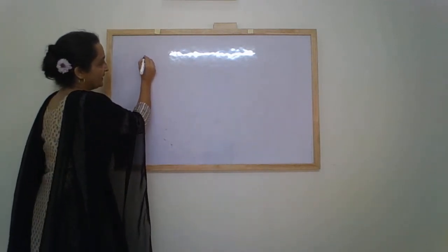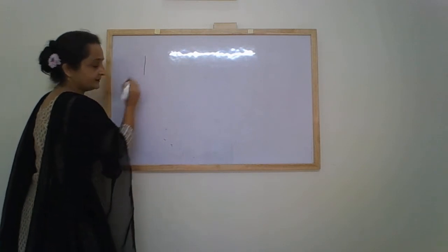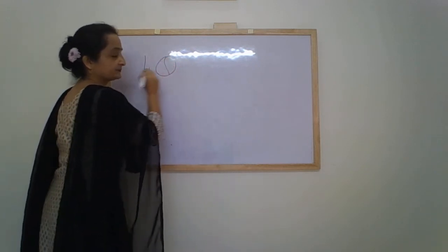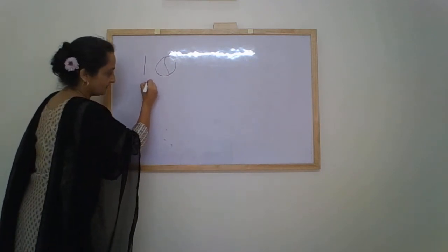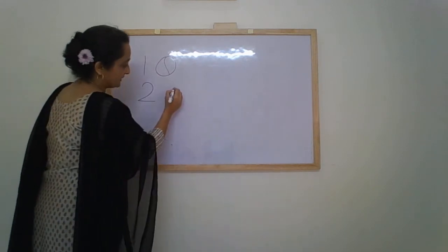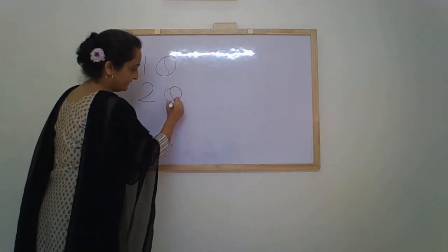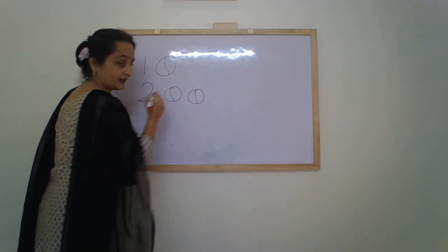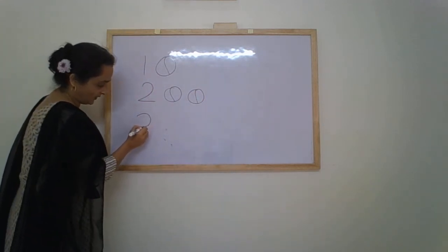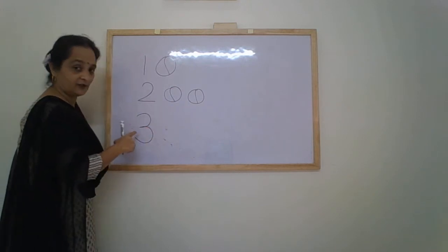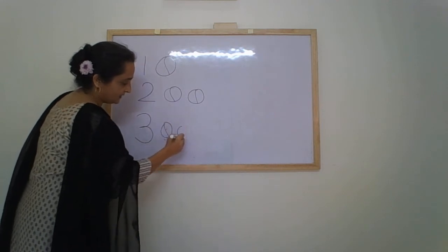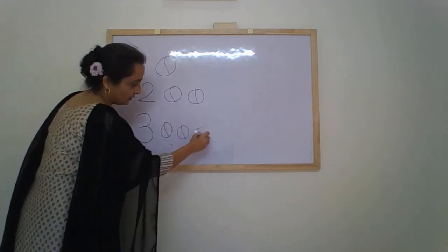Number 1 — 1 ball. Number 2 — 2 balls: 1, 2. Number 3: 1 forward curve, 1 more forward curve — 1, 2, 3. Number 3.